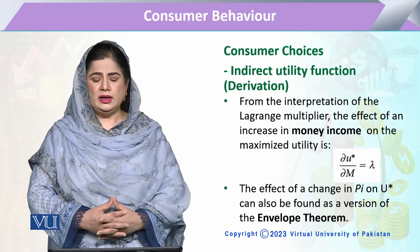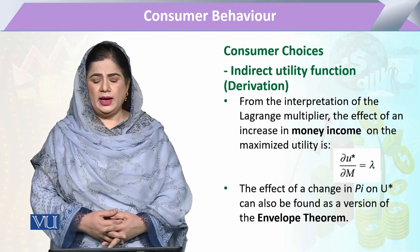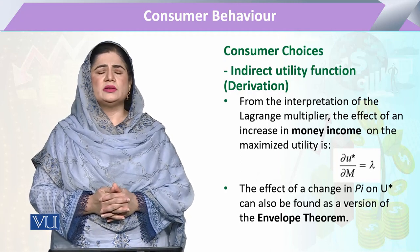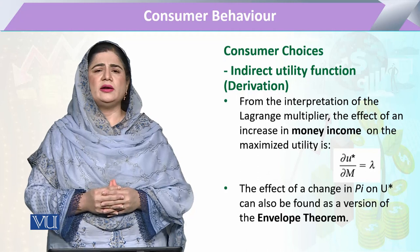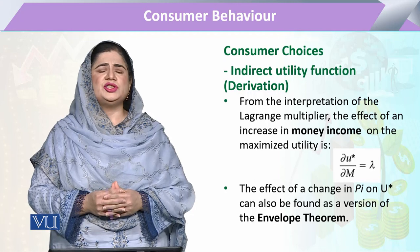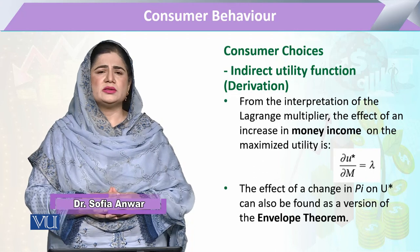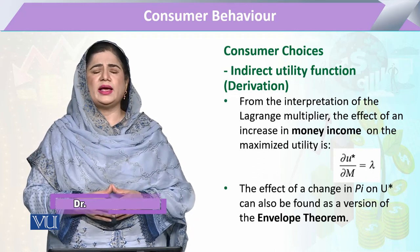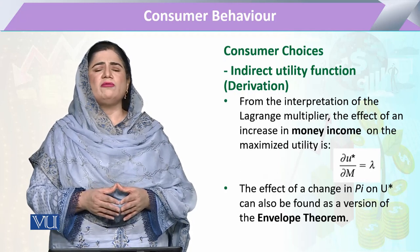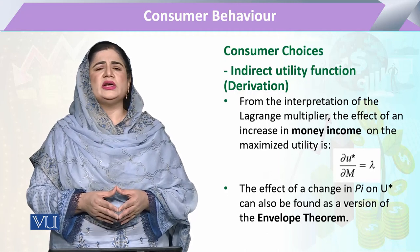Today's topic is how we are going to derive the indirect utility function. The indirect utility function is a technique or method that we utilize in the Marshallian demand function to assess the change in the utility of a consumer via change in price. We calculate this through the change in the expenditure of the consumer with the change in price.